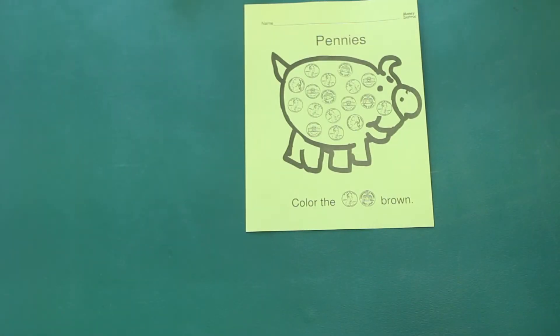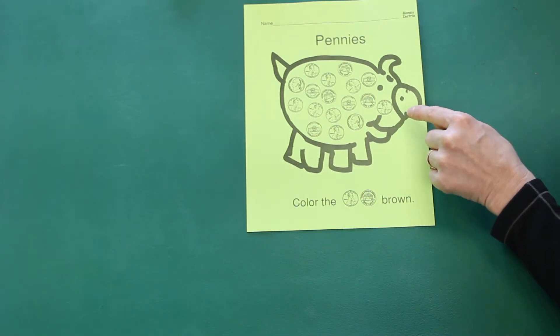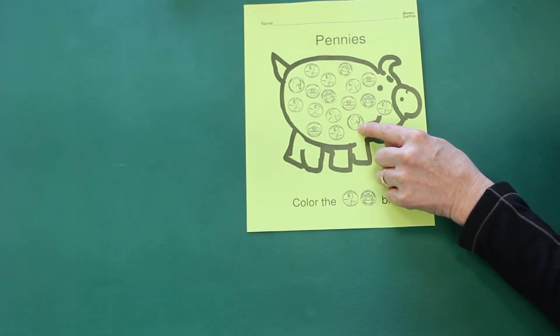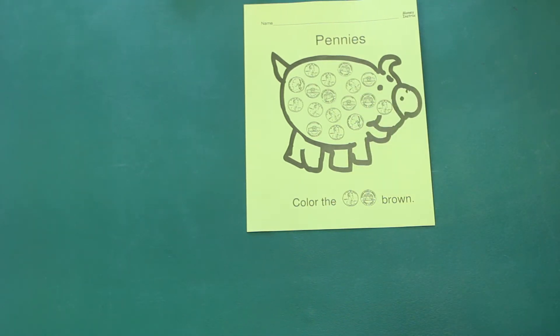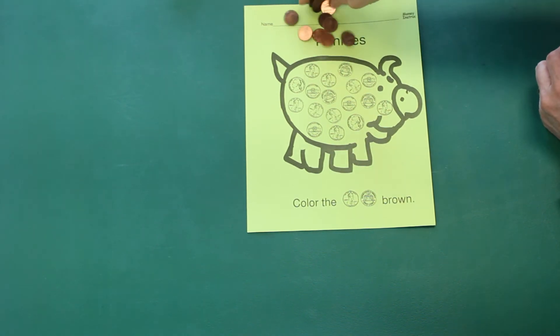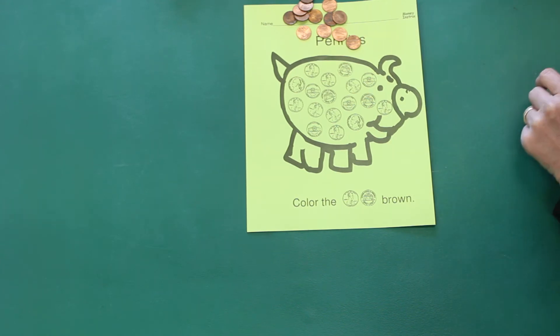In your Thrilling Thursday Packet, you're going to find a piggy bank that looks like this, and inside that piggy bank there are some nickels and some pennies. I want you to take your little baggie, and inside that little baggie you're going to find some pennies, and I want you to match those pennies to the pennies in your piggy bank.